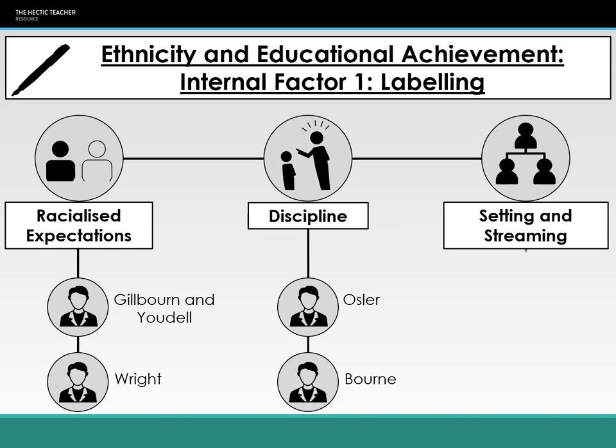Foster examined setting and streaming, finding that stereotypes of black and Asian students affect which sets and streams they're placed in. The stereotype of Asian students being more academic places them in higher sets, giving them access to more educational opportunities and leading to exceeding expectations. Black students are seen as less able and are placed in lower sets and streams, creating a self-fulfilling prophecy of underachievement.